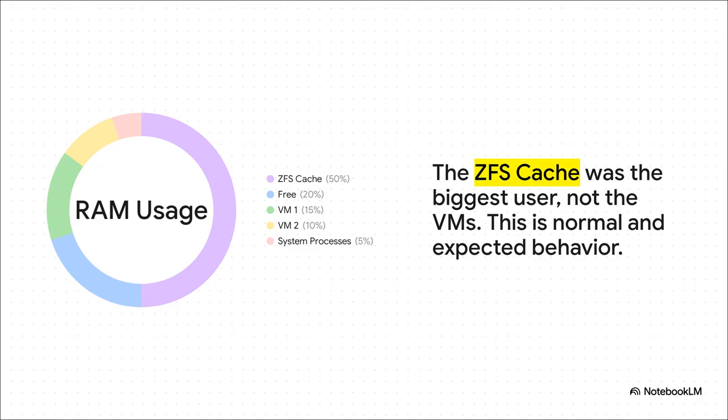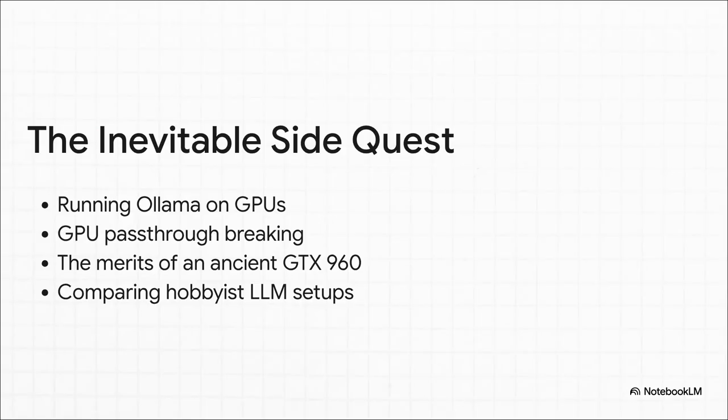Mystery solved. But because this is the internet, the conversation did not stop there. The original poster mentioned his Ollama AI instance was running on a GPU, and the thread completely derailed into a side quest about GPU pass-through, kernel updates, and whether an old GTX 960 is still a viable piece of hardware. That is peak Reddit.